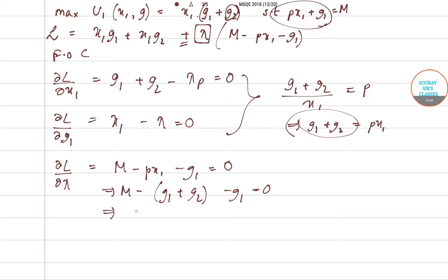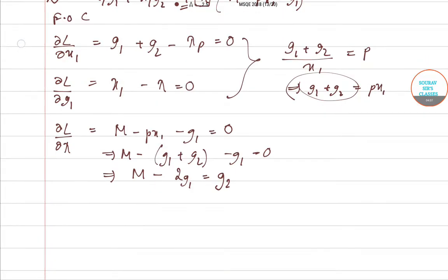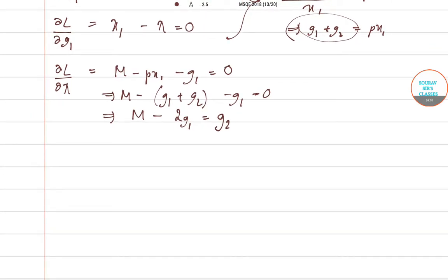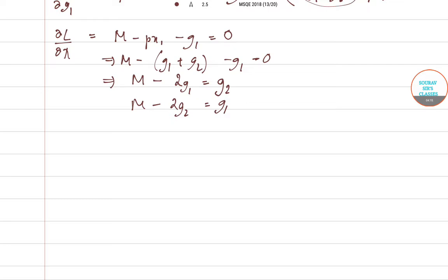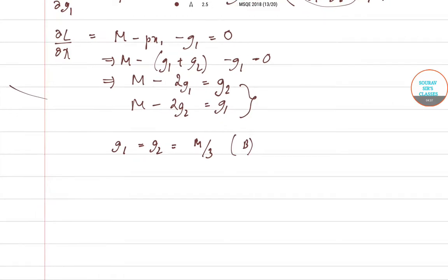Doing the same thing for the second individual — this is your homework — we get M − G2 = G1 + G2, which gives M − G1 = G1 + G2. On simultaneously solving both these equations we get G1 = G2 = M/3. This is given by our second option, b. Now let us go to our next question.